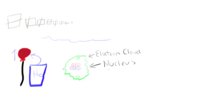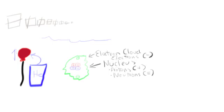The nucleus contains two sub-parts: the protons, which are positive, and the neutrons, which are neutral or equal. And the electron cloud contains the particles called electrons, and electrons are negative. So there are two parts to the atom — the cloud and the nucleus — and three sub-parts: the protons, the neutrons, and the electrons. Electrons are negative, protons are positive, and neutrons have no charge, or they're equal. And I think that's good for this video.